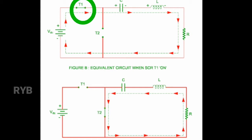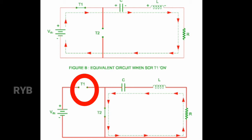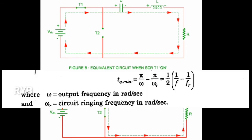When thyristor T1 is turned on with T2 off, the current I starts building up in the RLC circuit. As the circuit is underdamped, the load current after reaching some peak value decays to zero. At point A, as the load current tends to reverse, SCR T1 is turned off. After instant alpha, some minimum time must elapse for T1 to regain forward blocking capability. The minimum time is given by: T_Q(min) = π/ω − π/ω_R = 1/(2F) − 1/(2F_R), where ω is the output frequency and ω_R is the circuit ringing frequency, both in radians per second.